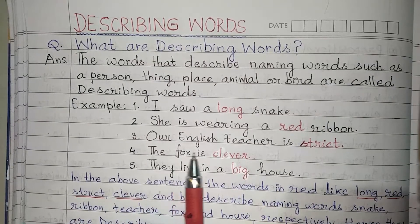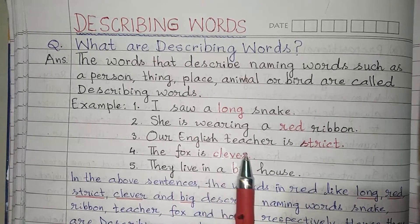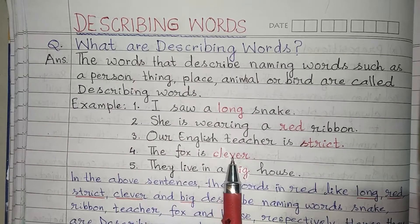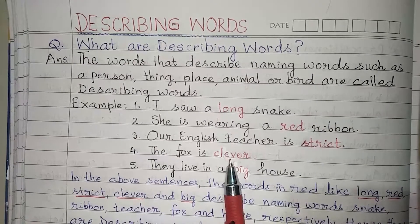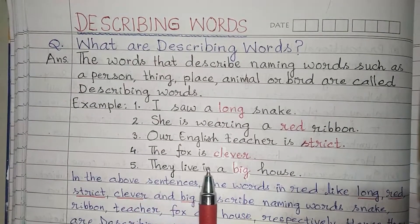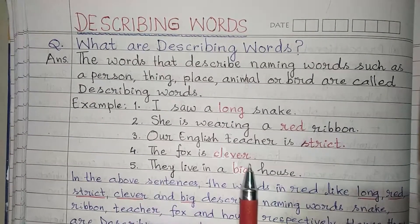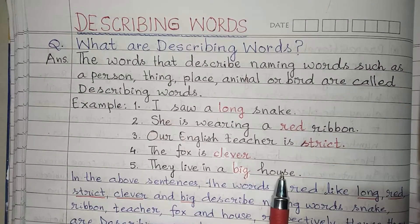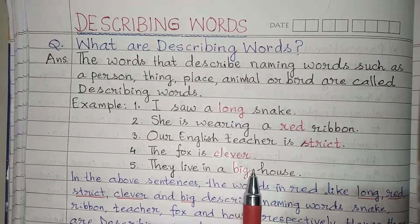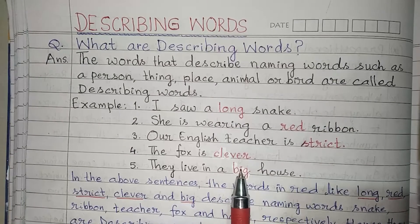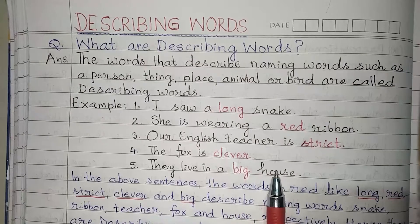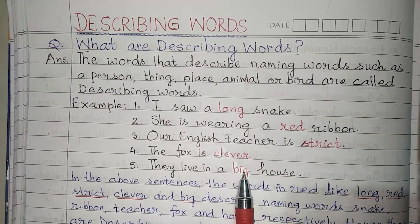Example four: The fox is clever. The word 'clever' describes the fox — how is the fox? Clever. So 'clever' is a describing word. Example five: They live in a big house. The word 'big' describes the house — how is the house? Big. Therefore the word 'big' is a describing word because it is describing the house.